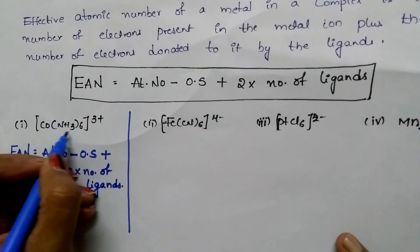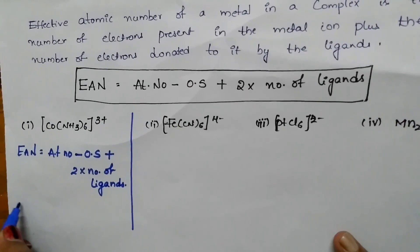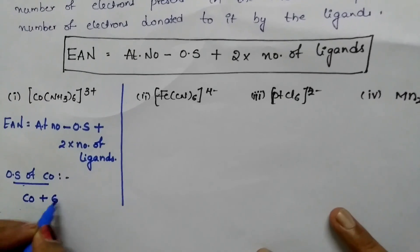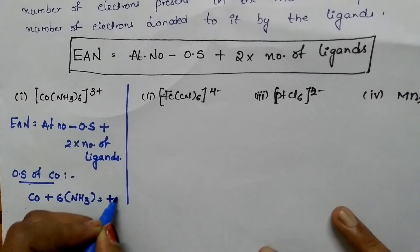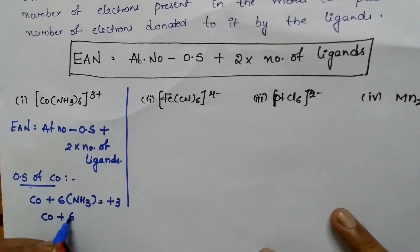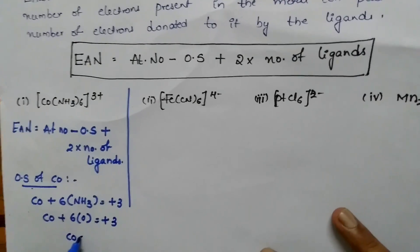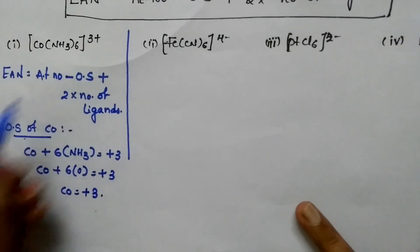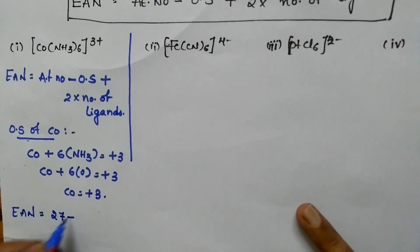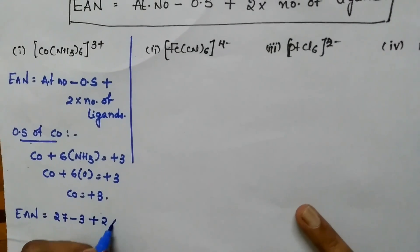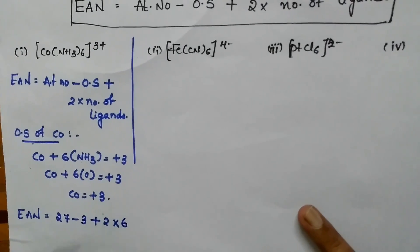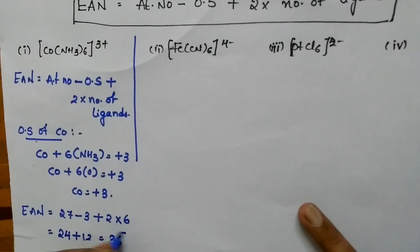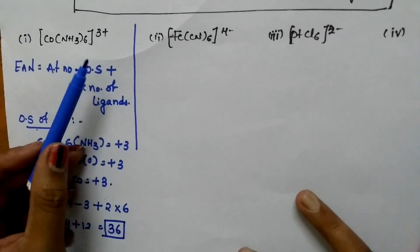What is the oxidation state of cobalt here? Ammonia is a neutral ligand, so Co + 6×(0) = +3, therefore cobalt's oxidation state is +3. EAN = atomic number of cobalt (27) minus oxidation state (3), plus 2 times number of ligands (6): 27 − 3 = 24, plus 12 equals 36. So the EAN of Co(NH3)6³⁺ is 36.